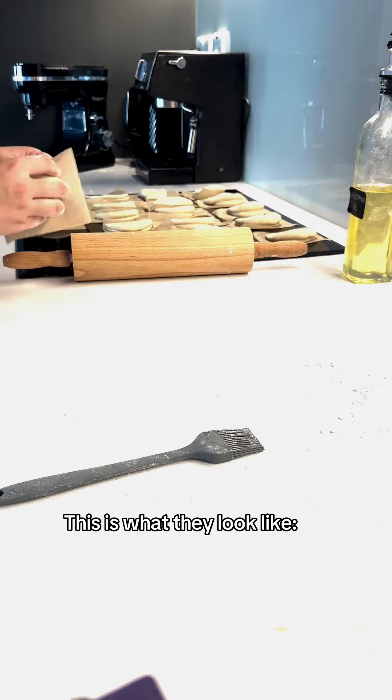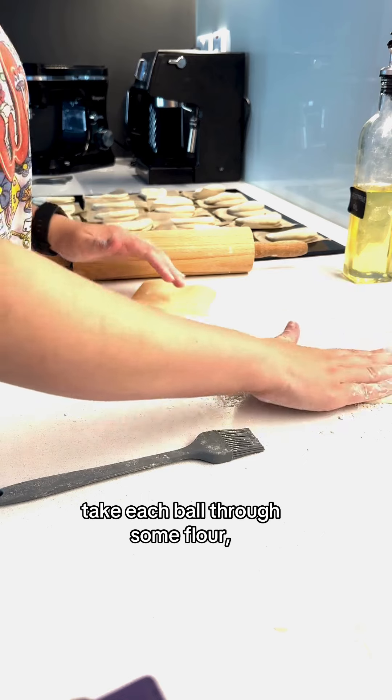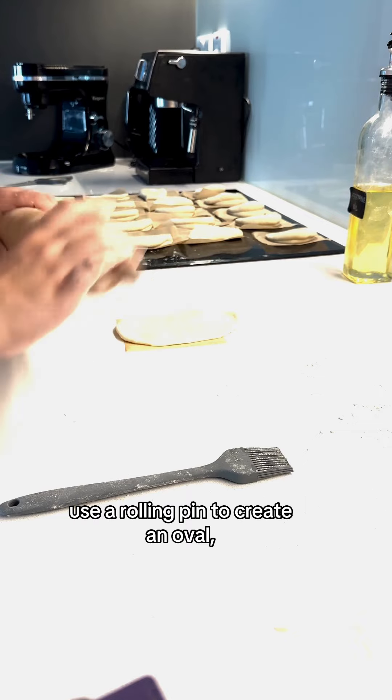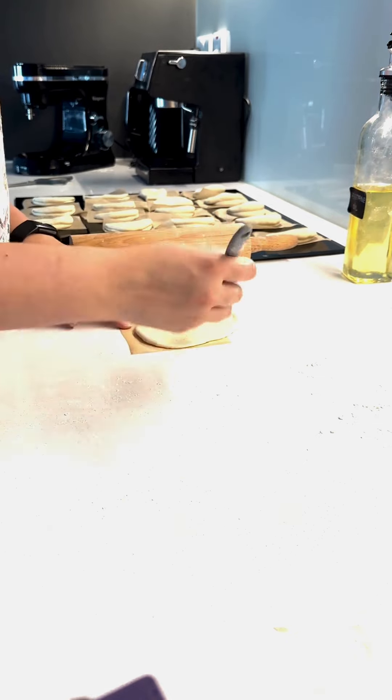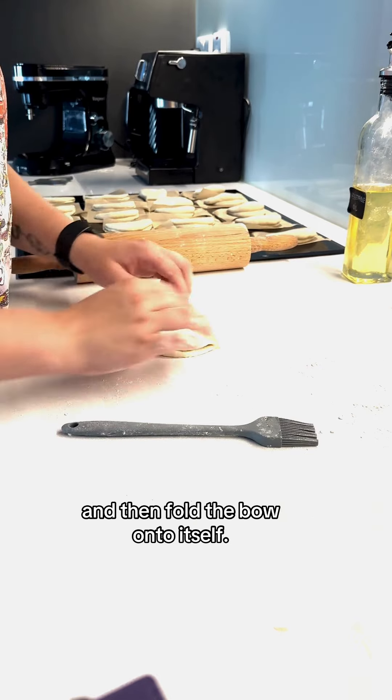This is what they look like and then we're gonna form the buns. Take each ball, pop it through some flour and then we're gonna use a rolling pin to just create some ovals. Add a little bit of oil and spread that across and then fold the bun onto itself.